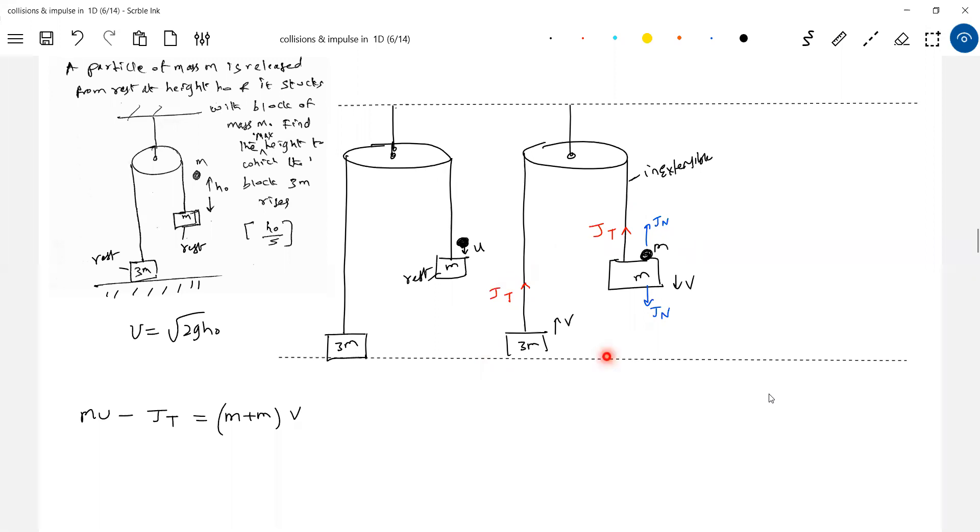Momentum is not conserved for the total system. If the system is like this, plus 2JT is upward, plus JN minus JN, plus 2JT is upward. Net impulse is there along Y axis, so momentum is not conserved of the total system. You can apply impulse-momentum equation for this. Again, momentum of this also not conserved because plus JN minus JN, plus JT is unknown, unbalanced. Then what is the alternative? Writing impulse-momentum equation.